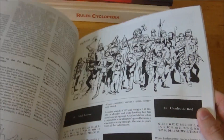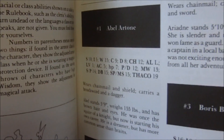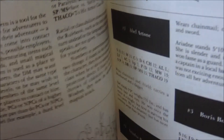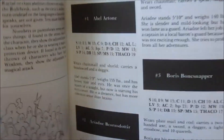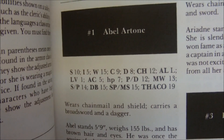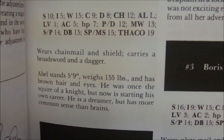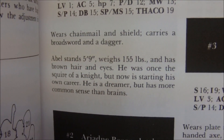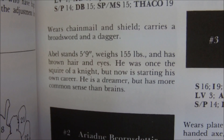Inside the book you have your whole list of characters — a whole bunch of fighters, each illustrated with a key so you can see which fighter is which. The first fighter is Abel Artone: level 1, strength 10, intelligence 5, wisdom 15, constitution 9, dexterity 8, charisma 12. He wears chainmail and a shield, carries a broadsword and dagger. Abel stands 5'9", weighs 155 pounds, has brown hair and eyes. He was once a squire of a knight but is starting his own career — a dreamer with more common sense than brains.